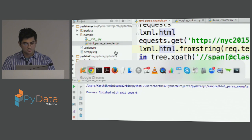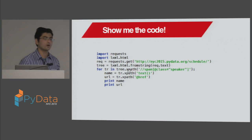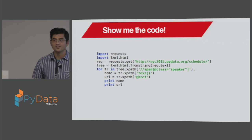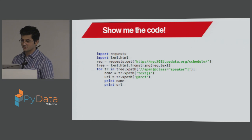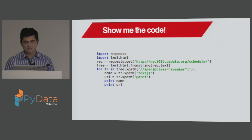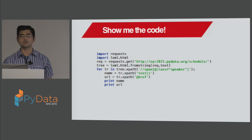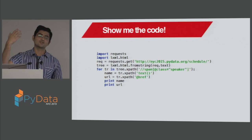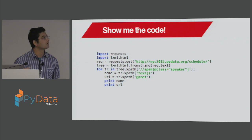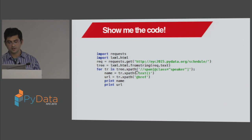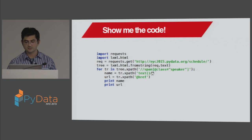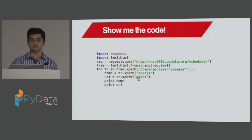So this should have given all the speaker list of this conference. It goes to the schedule page and scrapes all the speaker names. It gets the XPath for the speakers, then gets the text and the href associated with them, and prints those. That's what it's doing.